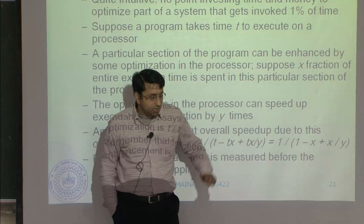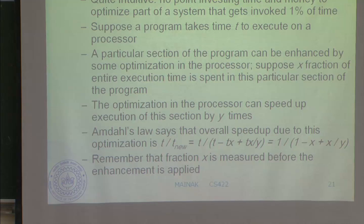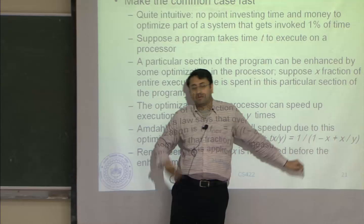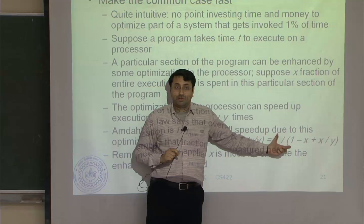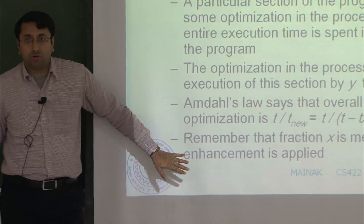If you look at this equation and ask: suppose Y is infinite — unbounded speedup — what happens? The speedup is then limited by 1 / (1 - X). That is the upper bound you can achieve no matter what you do. The portion of the program that you cannot improve will ultimately become the bottleneck — which is, again, common sense. Note that the fraction X is measured before the enhancement is applied, not after, because that is going to change.